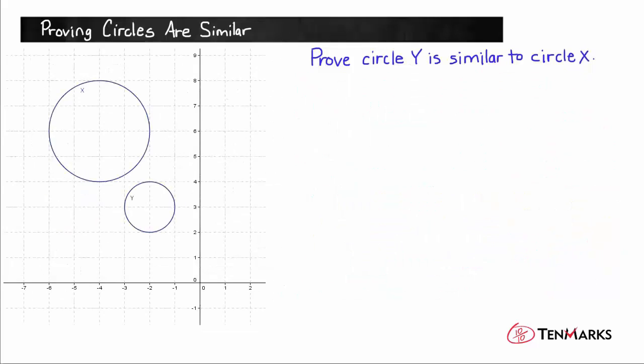So here again we have two circles graphed on a coordinate system. They're in different locations and they're different sizes, but the goal is the same, and that is to prove that the two circles are similar to each other.